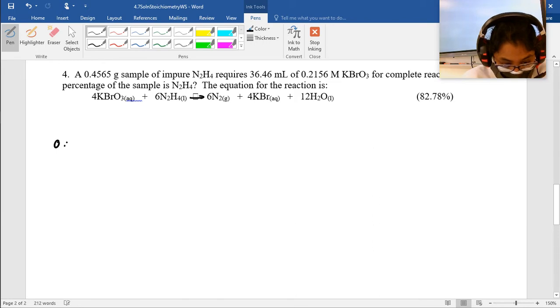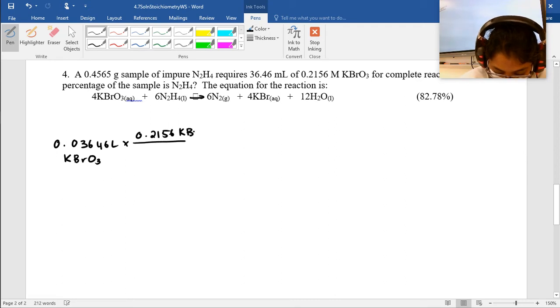So 0.03646 liters. I'm going to use the molarity over here, 0.2156. This is liters of KBrO3. I'm going to use the molarity of that substance. One liter of KBrO3. So that's the molarity, 0.2156 over one liter. This is moles. Units are super important, everybody.